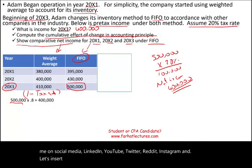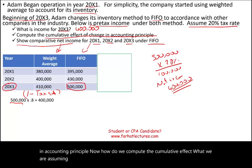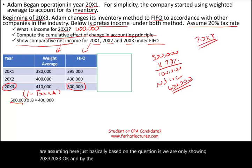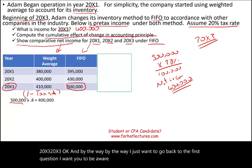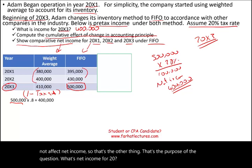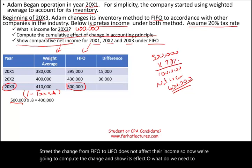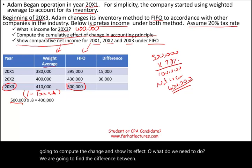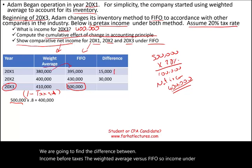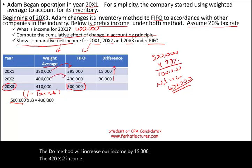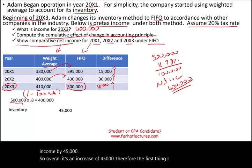Now let's answer question number two: compute the cumulative effect of the change in accounting principle. Here we are assuming we are only showing 20x3. I also want to note that changes in accounting principle do not affect net income for 20x3 — the change from weighted average to FIFO does not affect that net income figure. To compute the cumulative effect, we find the difference between income before taxes under weighted average versus FIFO. Income under FIFO would have increased income by $15,000 for 20x1 and $15,000 for 20x2, for an overall increase of $45,000.